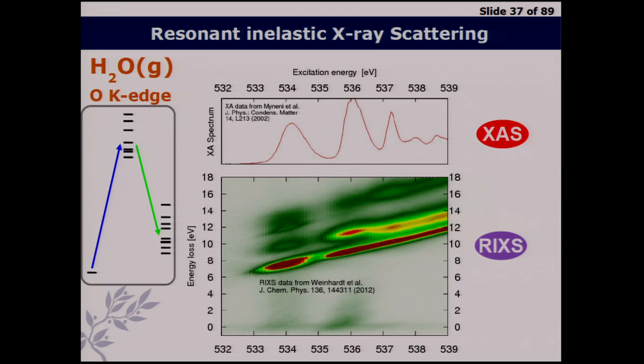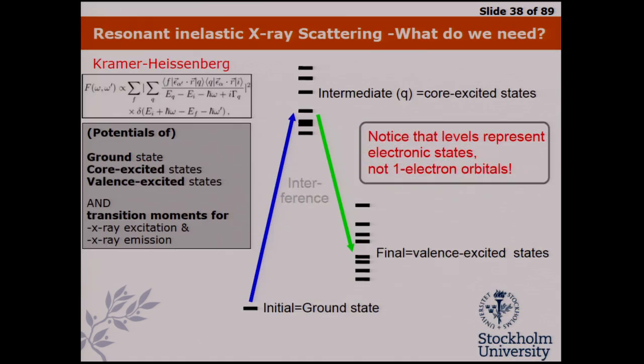You have to consider all these different combinations, and for each final state, all different pathways to reach that state. Within each peak, there are many different nuclear quantum levels — vibrations of the nuclei — that have to be considered when we do this accurately. To simulate this, we need the ground states, core excited states, valence excited states, the potentials to generate nuclear wave functions in this multidimensional landscape, and the transition moments for both parts of the process — all put into the Kramers-Heisenberg equation to simulate the spectra.